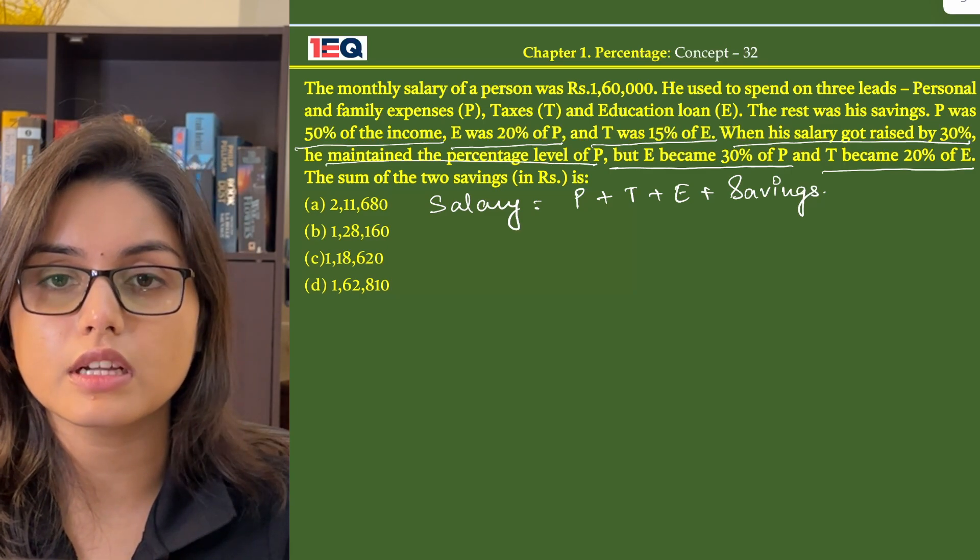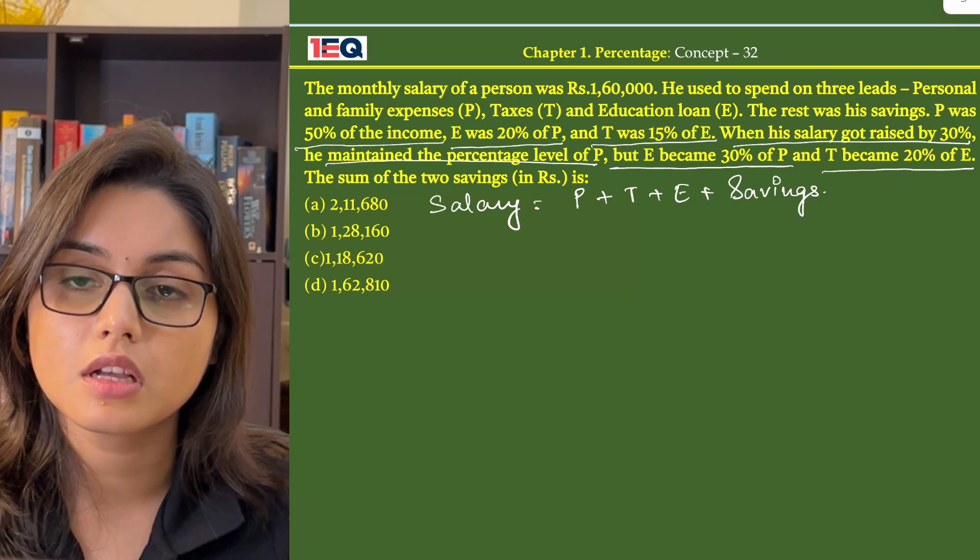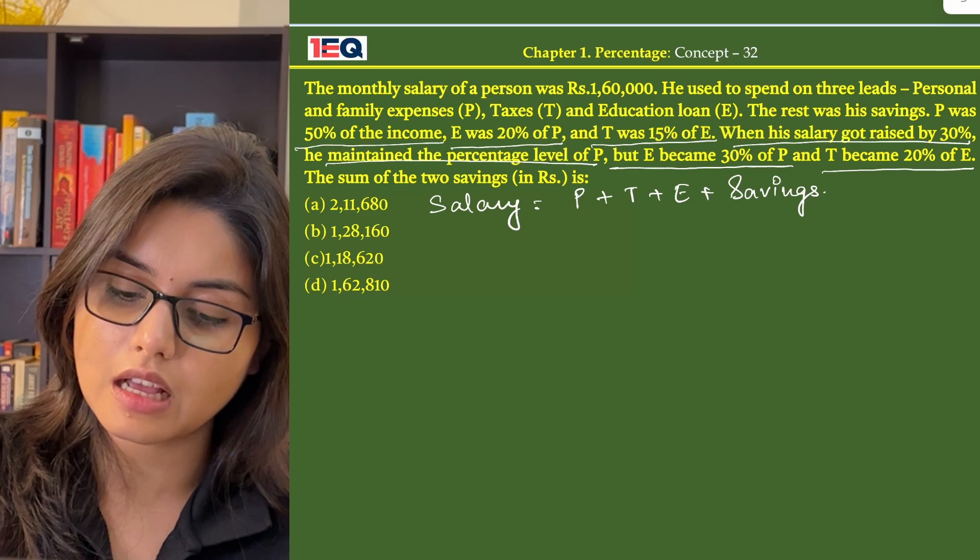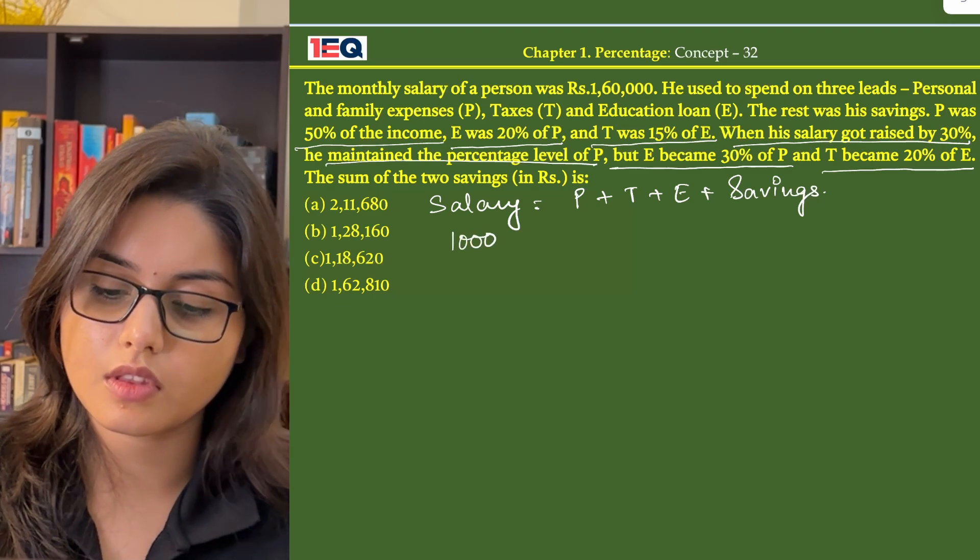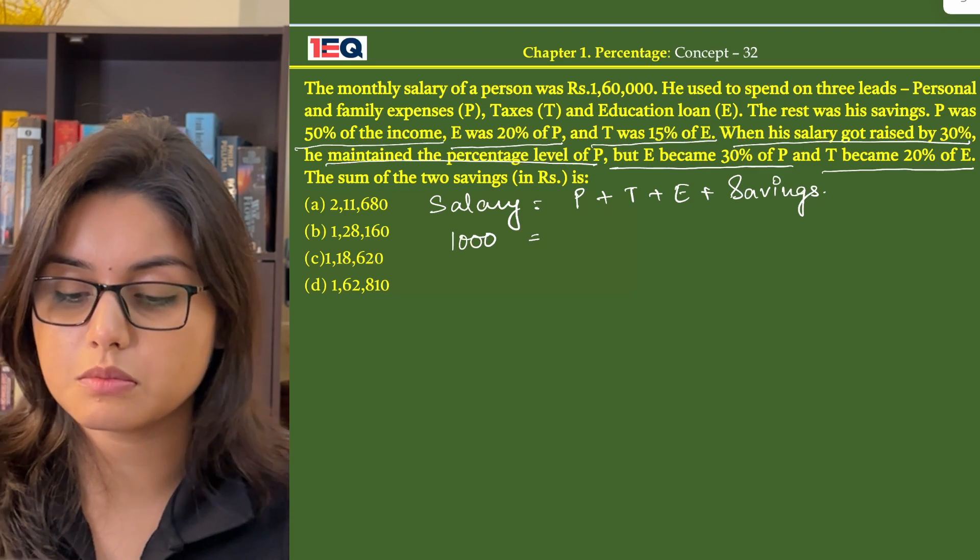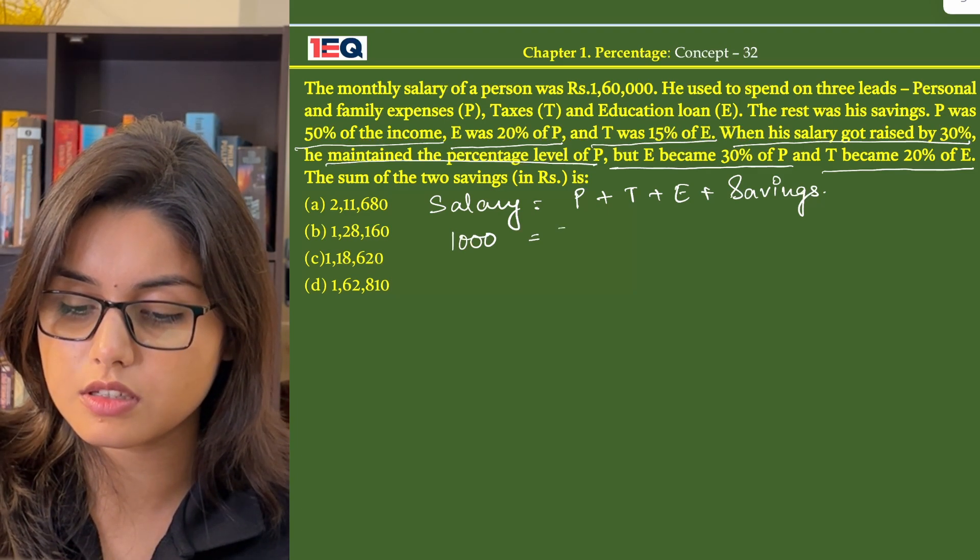So we already know that his monthly salary was Rs 1,60,000. But in order to reduce our calculations, let's assume that his salary was Rs 1,000. P was 50% of his income. That means 50% of Rs 1,000 is Rs 500.